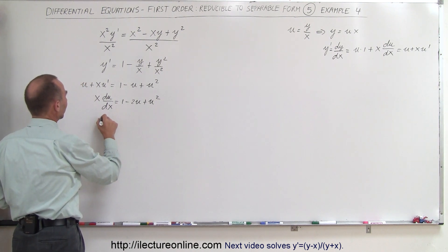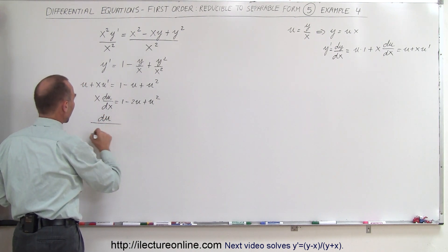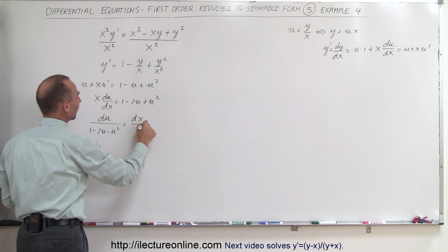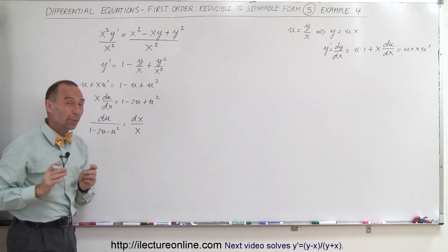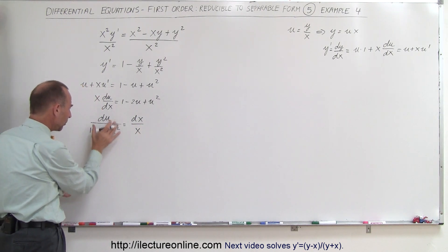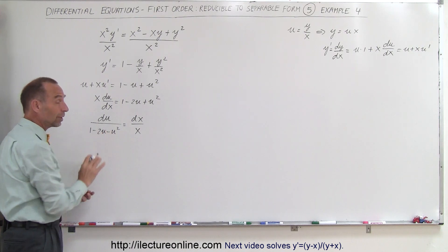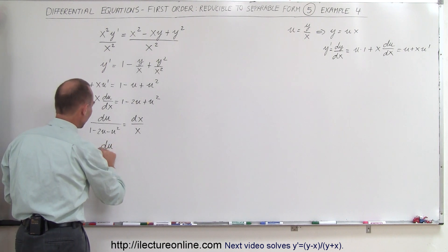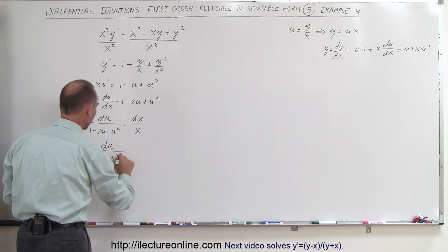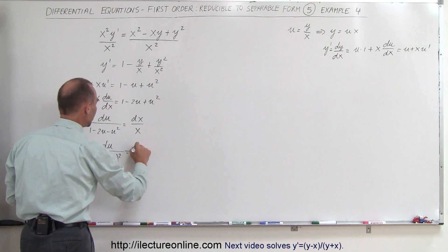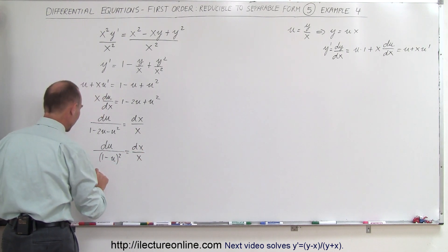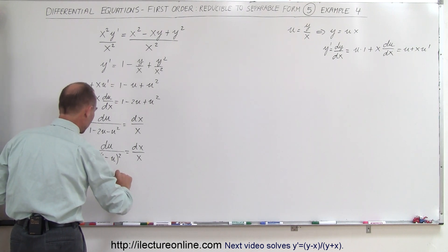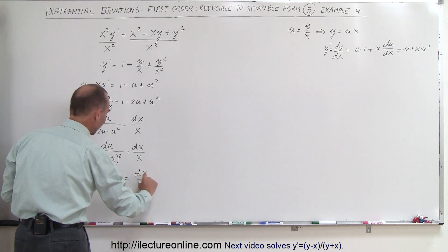Now we can separate the variables: du divided by 1 minus 2u plus u-squared equals dx divided by x. We're ready to integrate, but first we realize this denominator is actually factorable — we can write it as du divided by (1 minus u) squared equals dx over x. Then writing it as (1 minus u) to the minus second power du equals dx divided by x.